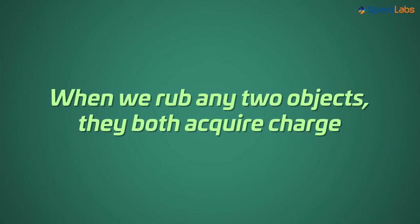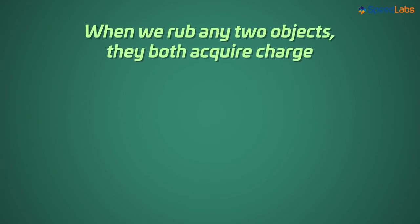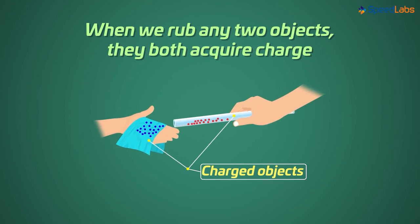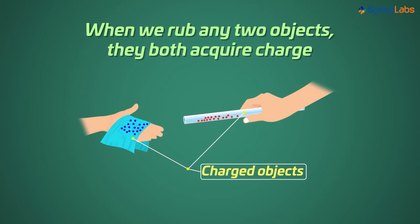When we rub any two objects, they both acquire charge. So here, after rubbing, the glass rod and the silk cloth both become charged objects. And this charge is responsible for the attraction with the pieces of paper.